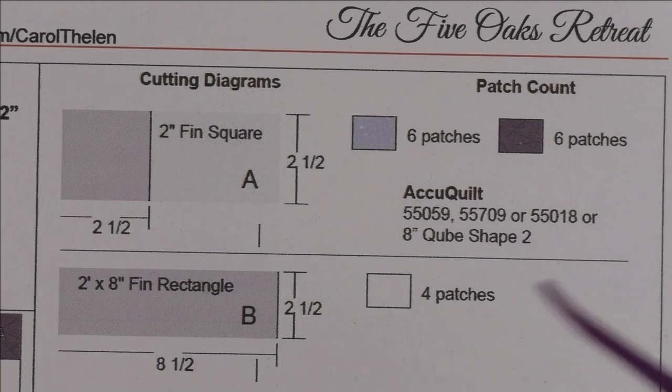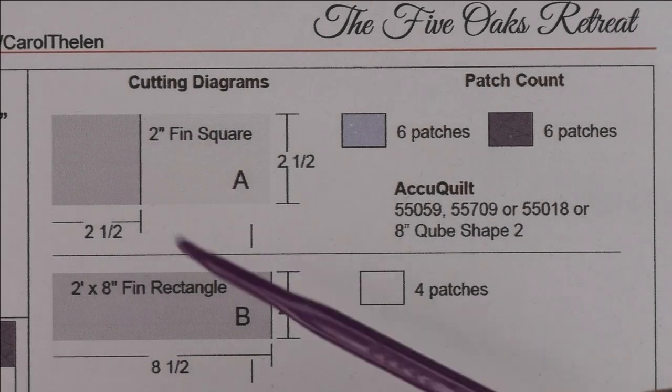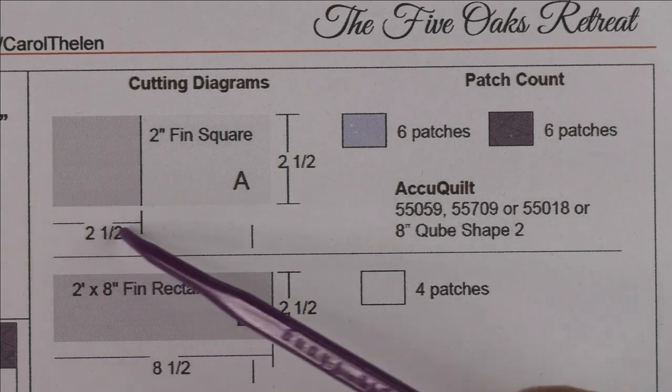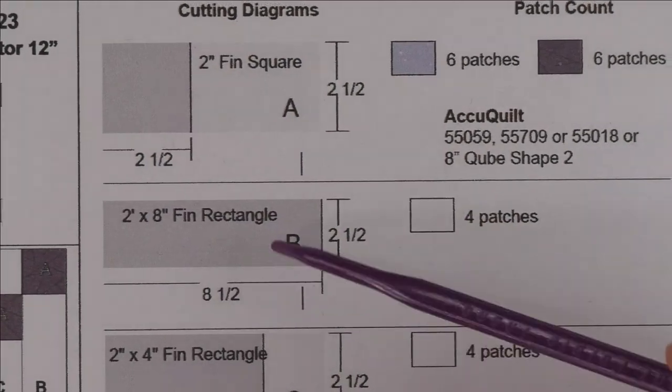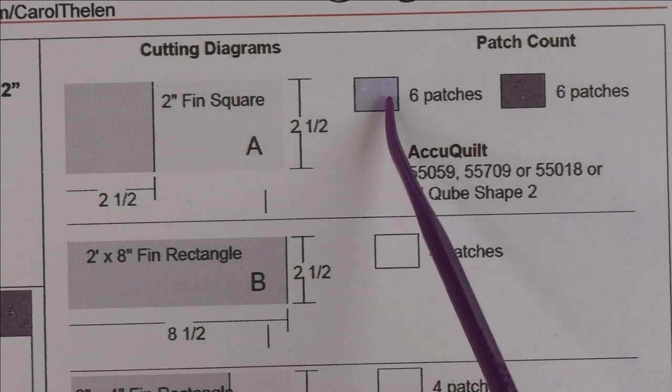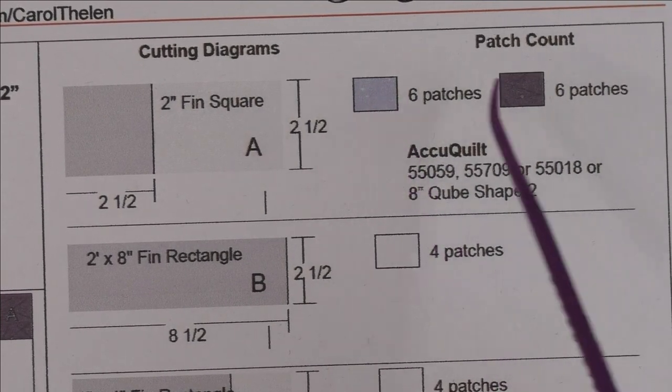Patch A is a two inch finished square. We're going to cut our squares at two and a half inches. These are the rotary cutting instructions on this side. We'll need six patches of the light fabric and six patches of the dark fabric.